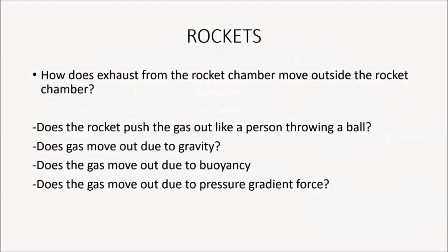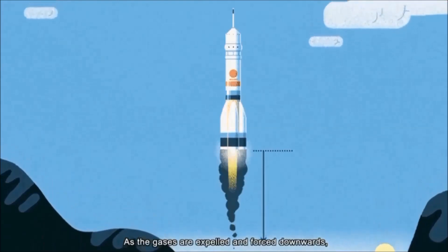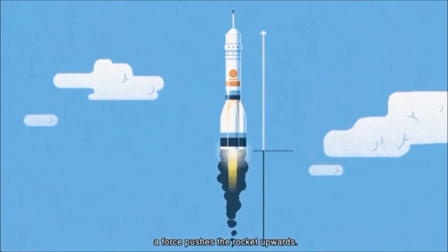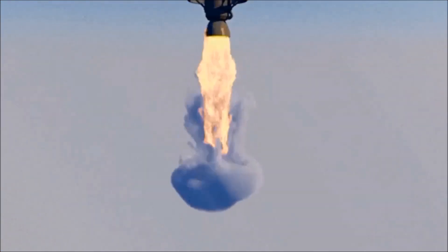How does exhaust from the rocket chamber move outside the rocket chamber? Does the rocket push the gas out like a person throwing a ball? Does gas move out due to gravity? Does the gas move out due to buoyancy? Does the gas move out due to pressure gradient force? According to MIT, a rocket in its simplest form is a chamber enclosing gas under pressure, with a small opening in one end allowing the escape of pressurized gas — escaping to low pressure sounds like pressure gradient force.